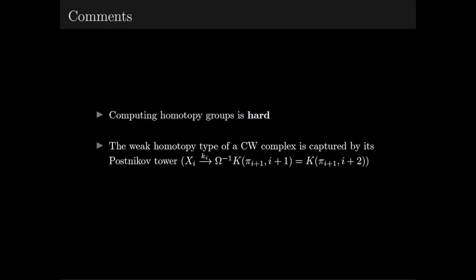So if we take the cofiber of this map, we get an Eilenberg-MacLane space with π_i in dimension i+2. The corresponding map from X_{i-1} to this Eilenberg-MacLane space is the i-th k-invariant.